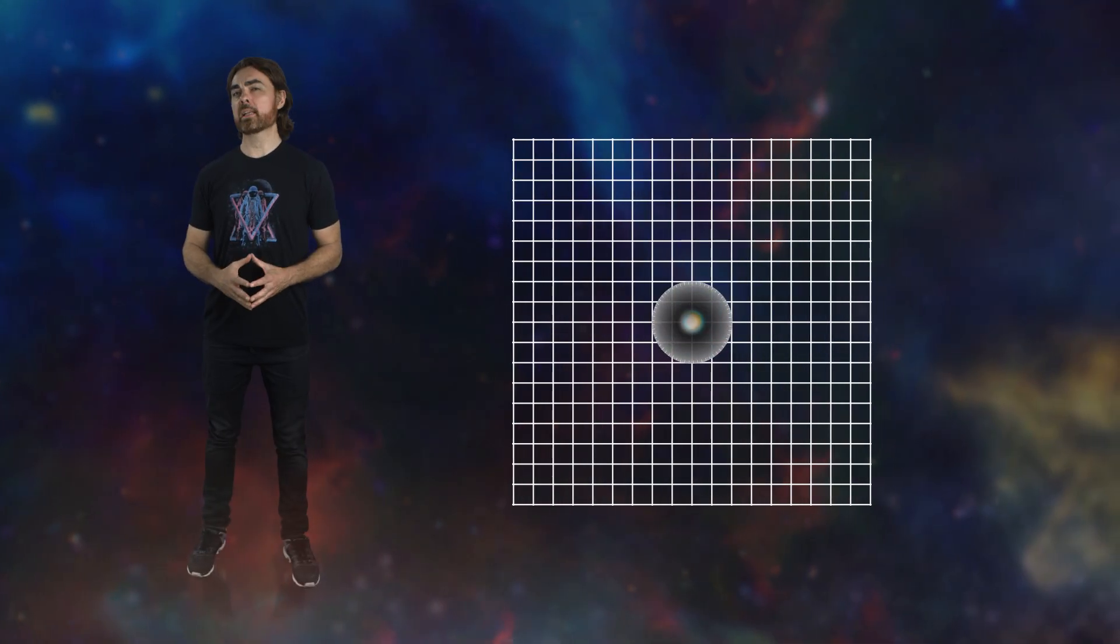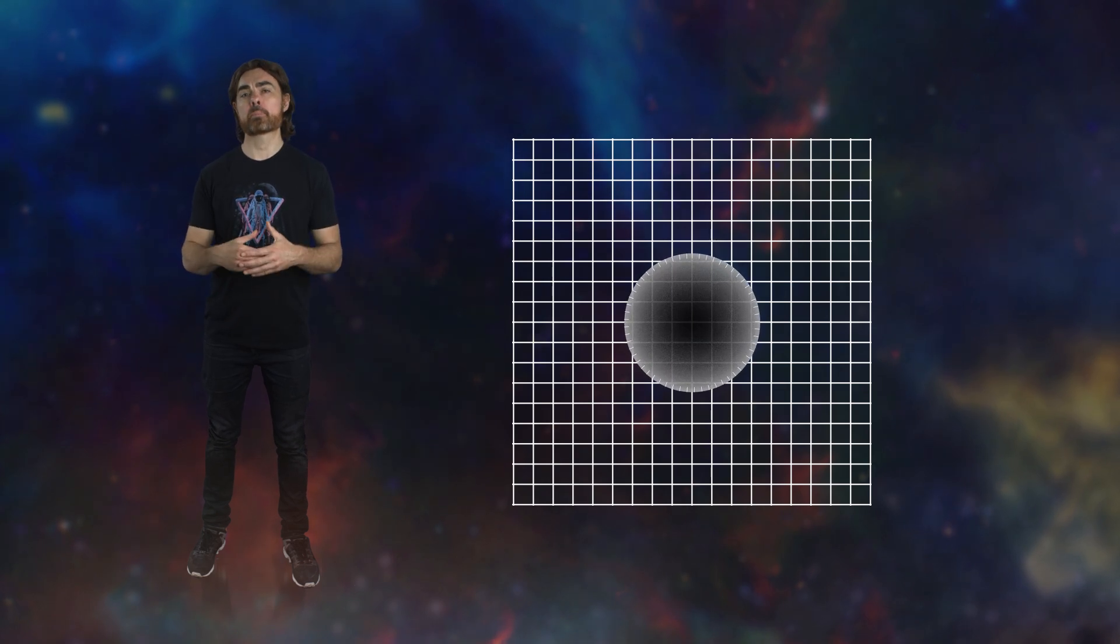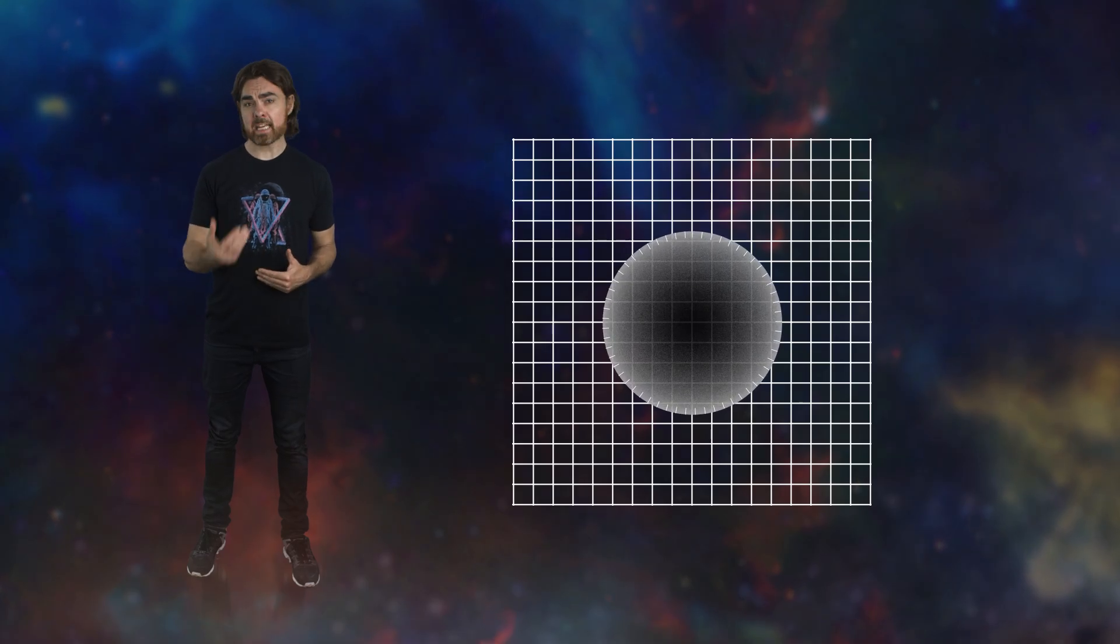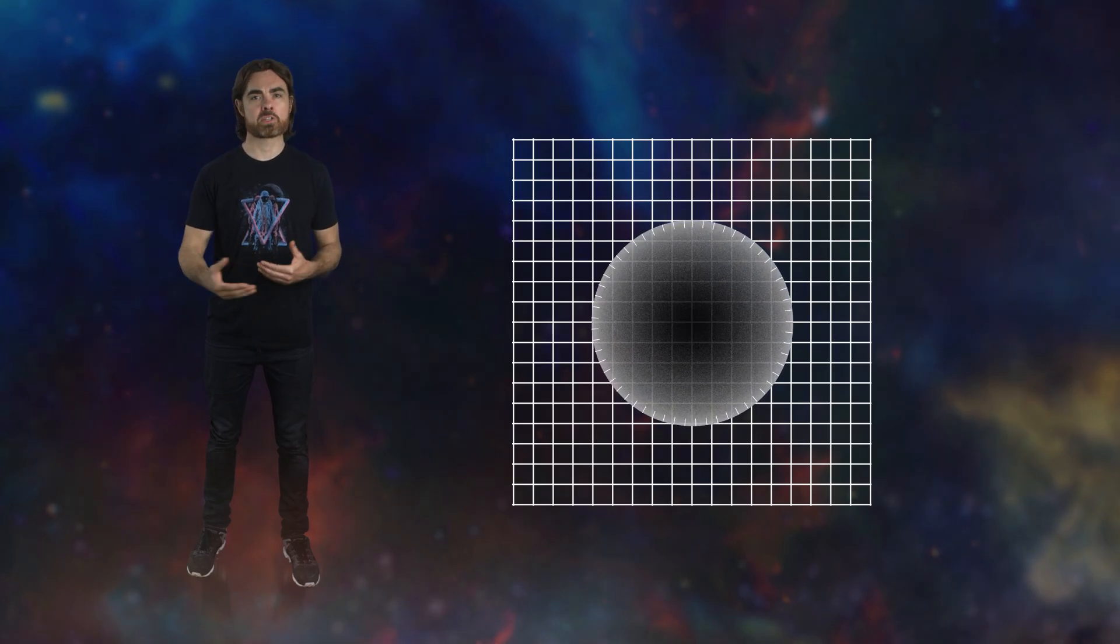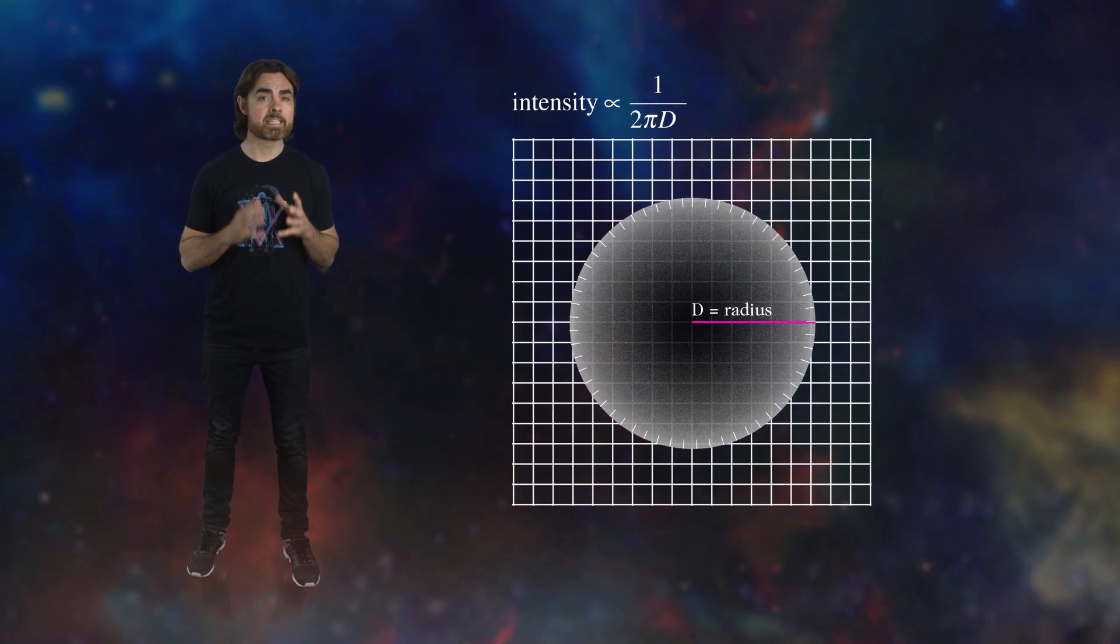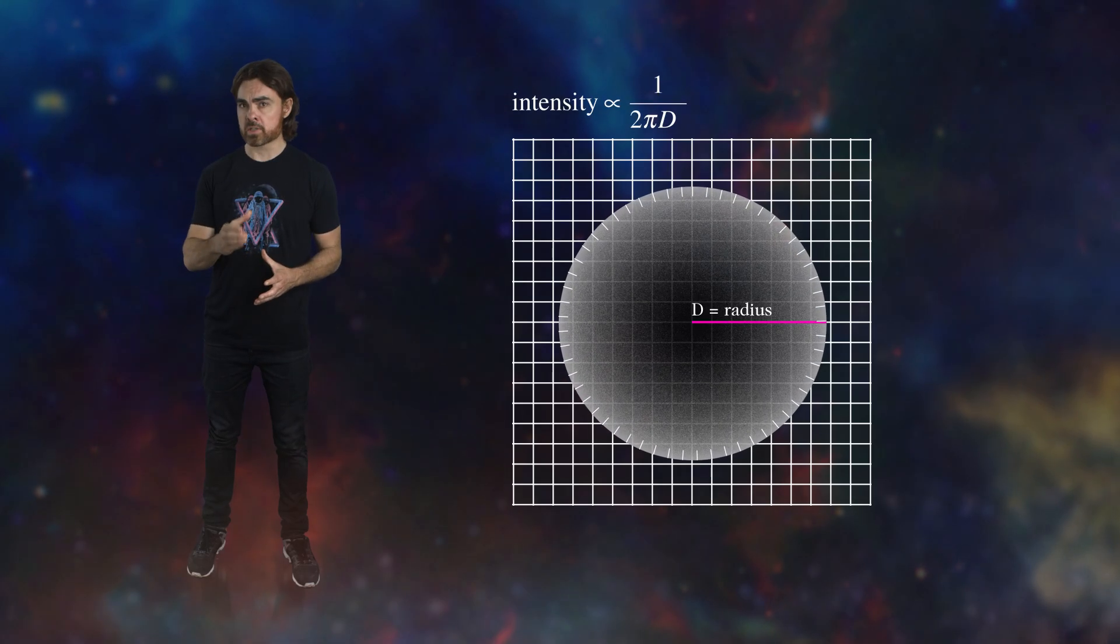But what if we instead lived in 2D space? Then the same pulse would spread out over an expanding circle, not a sphere. It would diminish in intensity proportional to the circumference of that circle, and also proportional to the radius, so the distance to the source, not the distance squared.